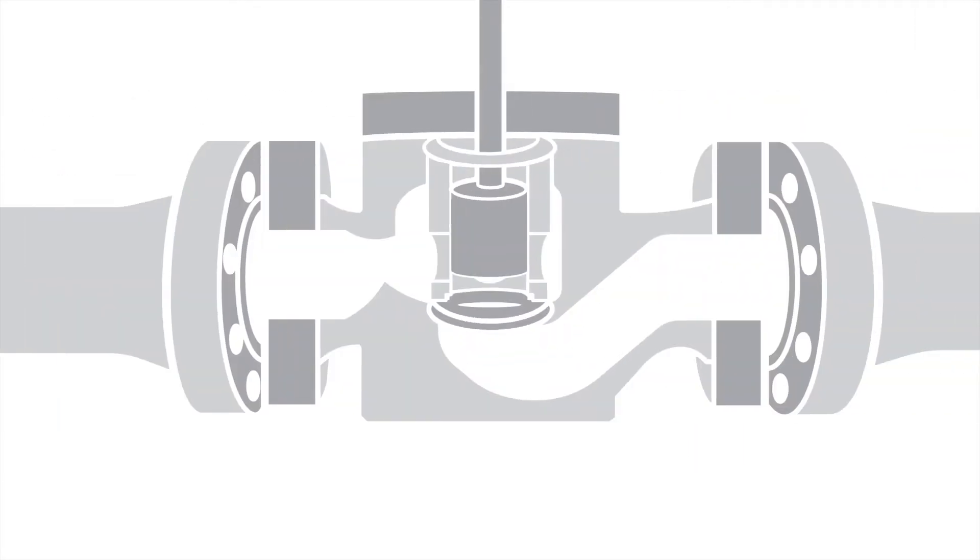Think of a control valve as a doorway. It connects an upstream, higher pressure source, P1, to a downstream, lower pressure destination, P2.